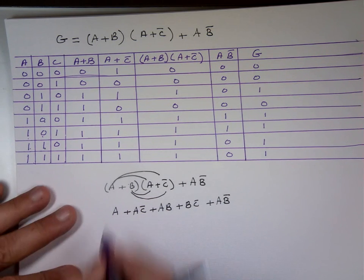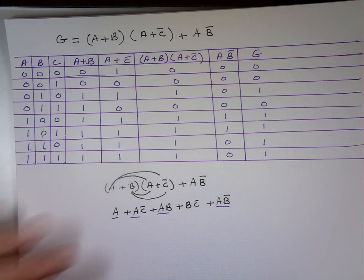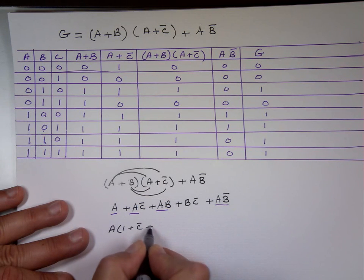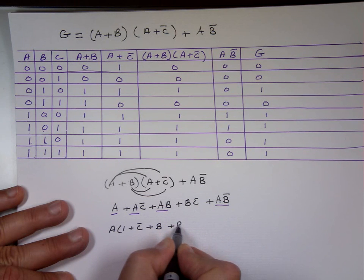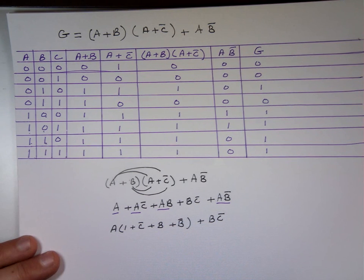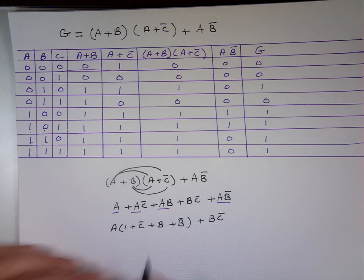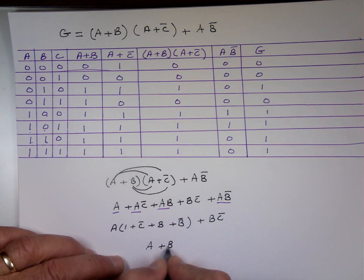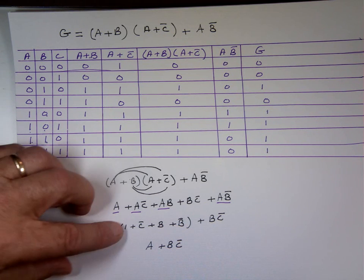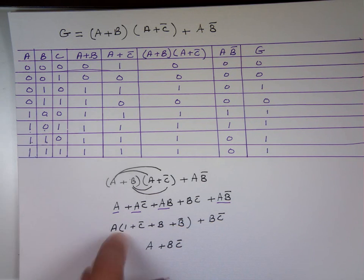If I factor an A out from the first group, I get A times the quantity one plus C bar plus B plus B bar. That's an OR gate with a one going into it. You already have a one going to the OR gate — that means the result inside the brackets is one. And even without the one, you have B and B bar, which also gives one. Once you have a one, you're done.